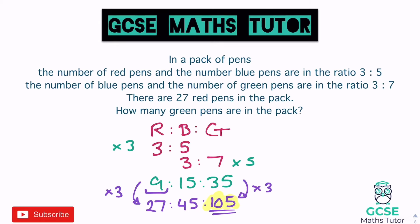You could also approach this differently: if there are 27 red pens and the original ratio has red as 3, then we times by 9 to get 27, so there are also 45 blue pens. Then applying that to the blue-to-green ratio — what do we times 3 by to get 45? Times by 15 — so 7 times 15 gives 105 green pens. Same answer, just working straight from the original ratios. This alternative only works for this particular type of question.